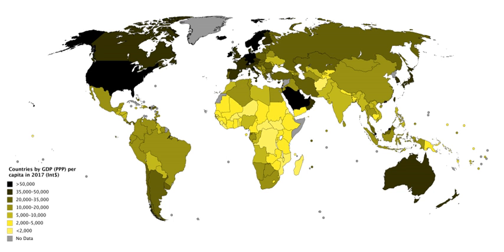Value of output equals value of total sales of goods and services plus value of changes in the inventory. The sum of the gross value added in the various economic activities is known as GDP at factor cost. GDP at factor cost plus indirect taxes less subsidies on products equals GDP at producer price. For measuring output of domestic product, economic activities are classified into various sectors.